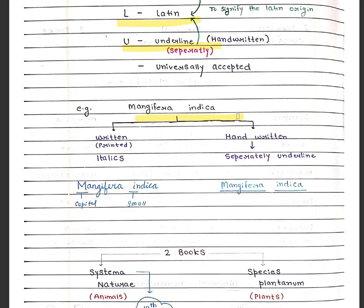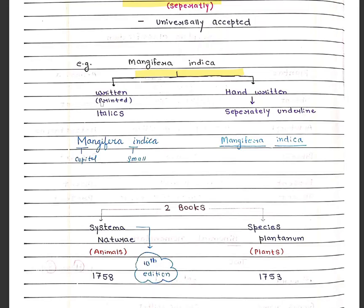Scientific names are written in italic Latin and underlined. For example, Mangifera indica is the scientific name of mango. If printed, it is written in italics; if handwritten, it is written separately and underlined.